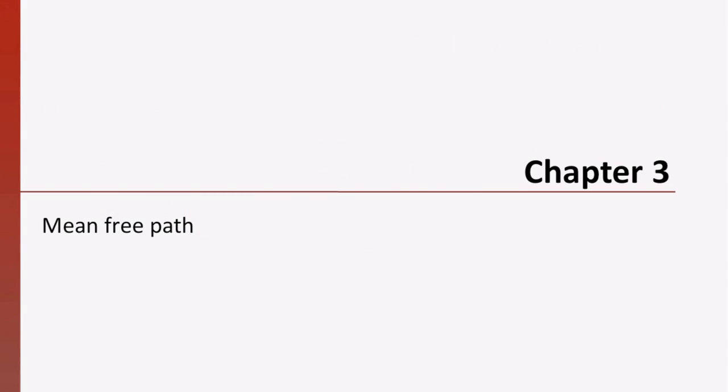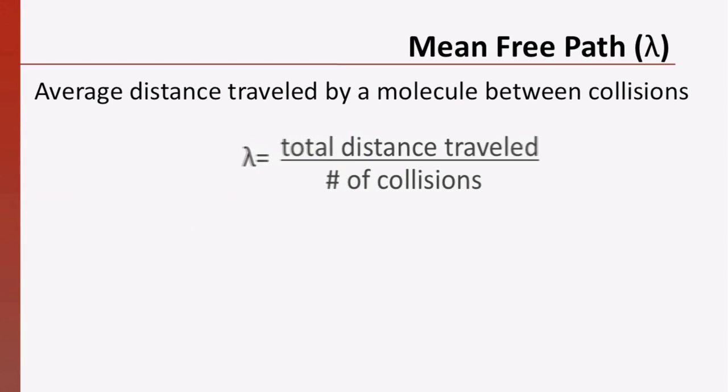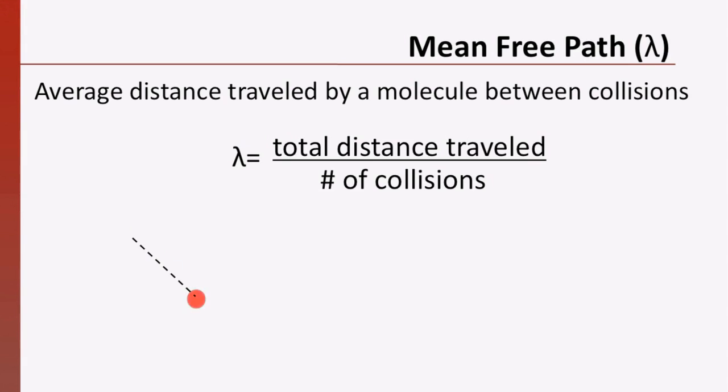The mean free path is the average distance traveled by a molecule between collisions. The mean free path for a molecule can be approximated by the distance traveled by the molecule in a given time t divided by the number of collisions the molecule experienced. Although the molecule may exhibit a random walk and change direction with each collision it experiences, we are simply interested in the scalar quantity of total distance traveled.